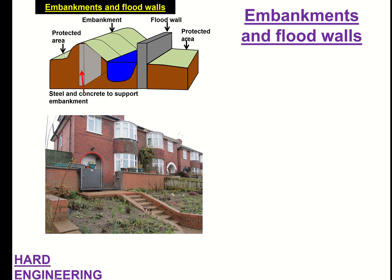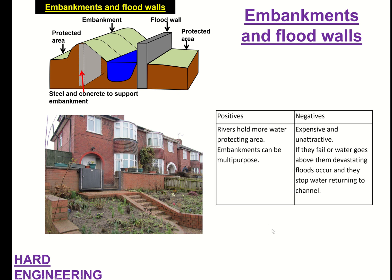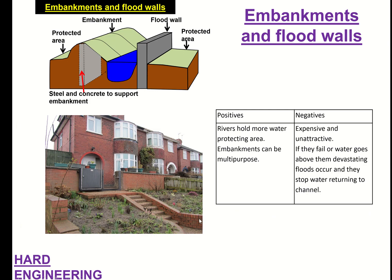The next strategy is embankments and flood walls. An embankment is an earthen structure, while a flood wall is a concrete structure with steel pilings driven into the ground — both designed to protect the area. You can see a flood wall in York next to the River Ouse, very close to the houses, with rubber-sealed gates to stop water getting through. The positives are that rivers can hold more water and embankments can be multi-purpose with walkways on top. The negatives are that they can be expensive, visually unattractive, and if they fail the resulting floods are devastating.